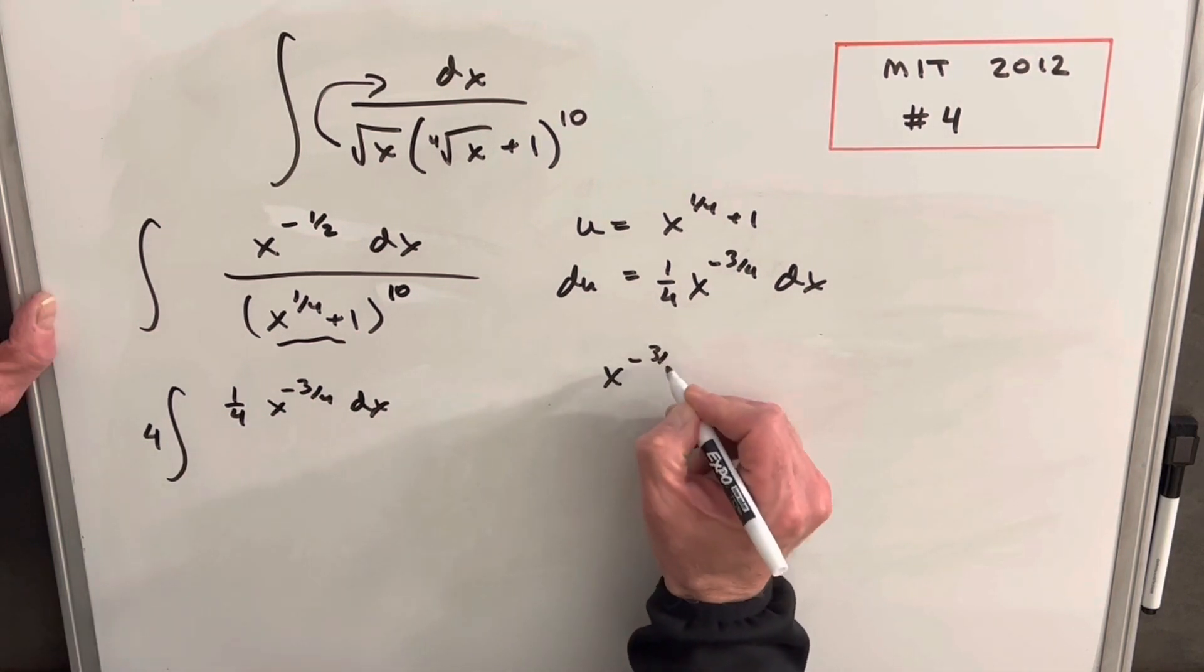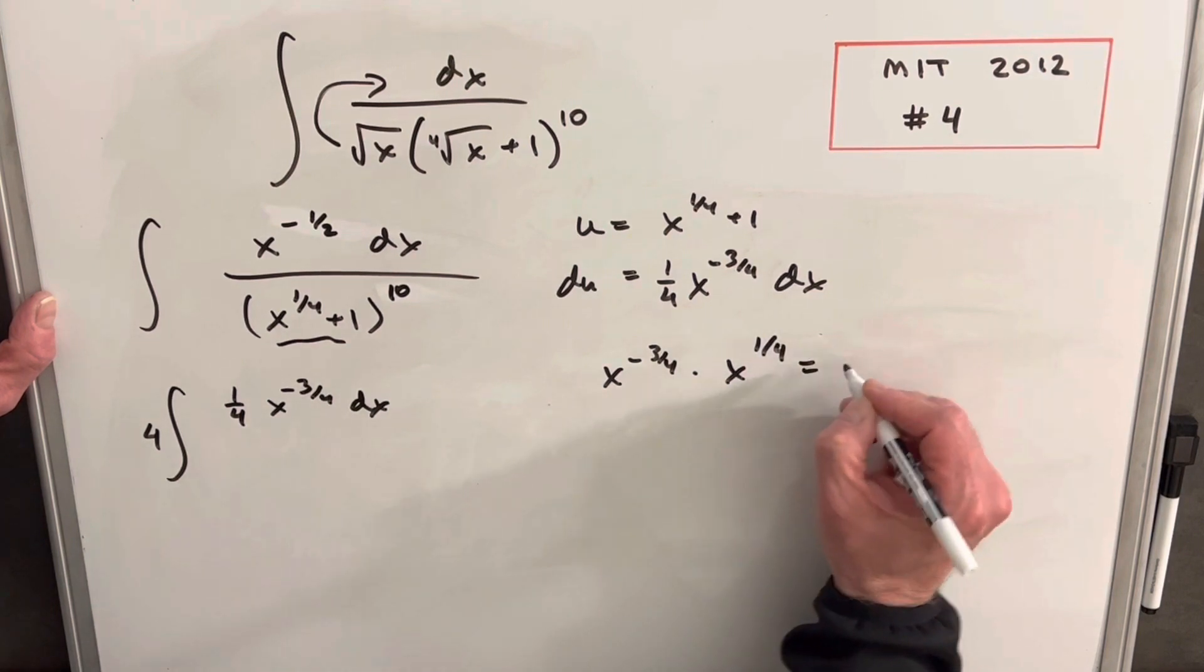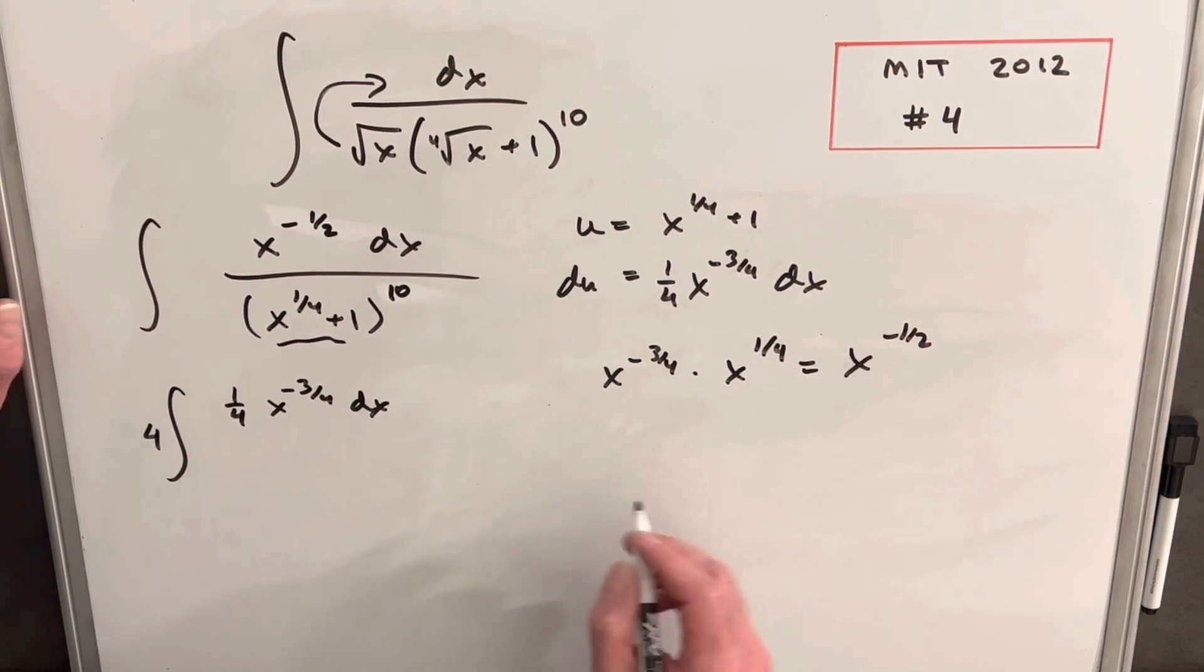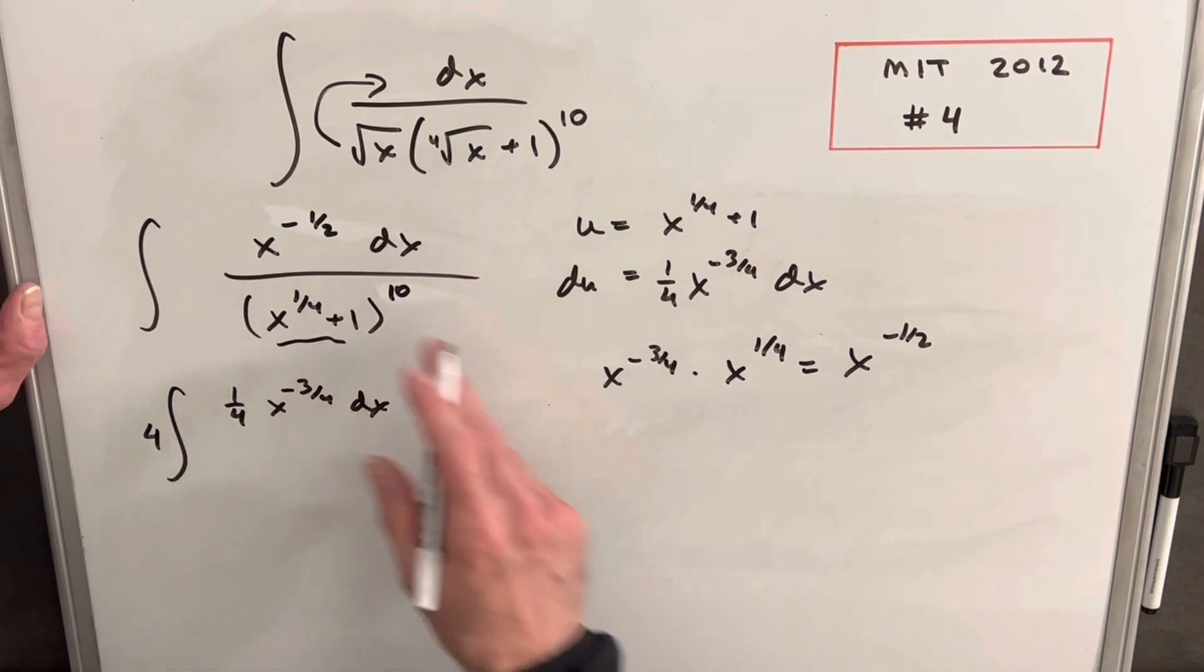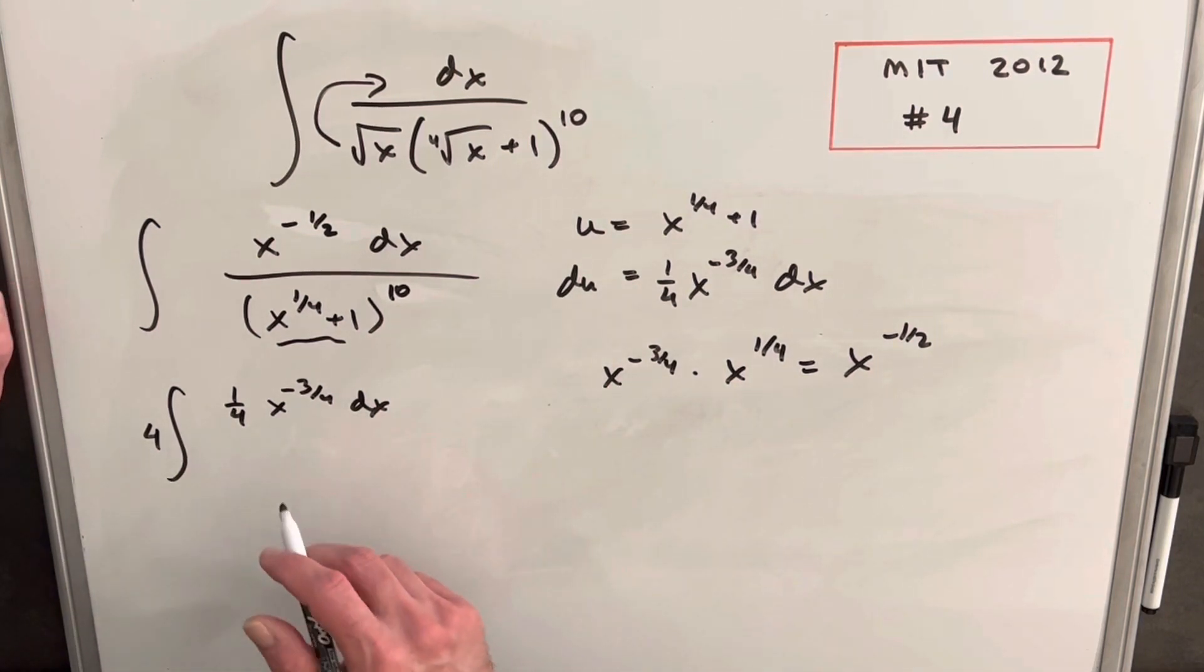Let's just notice that x to the minus three-fourths times x to the one-fourth equals x to the minus one-half, just with exponent rules. So then what we need, what we're missing up here is an x to the one-fourth. So let me just create that.